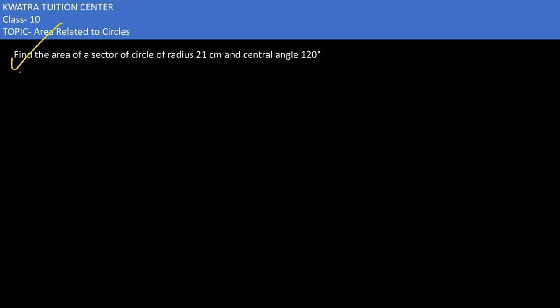Here it says find the area of a sector of circle. Radius is 21 cm, and we have 21. The central angle is given as 120, so this is theta as 120 degree.